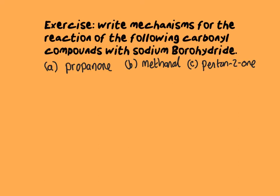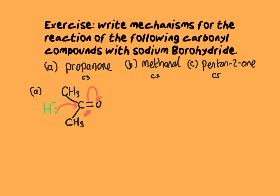In this next exercise, we're going to write mechanisms for the reaction of the following compounds with sodium borohydride: propanone, which is a C3 compound; methanal, which is C1; and pentan-2-one, which is C5. First, let's draw the structure of propanone. The best way to draw the mechanism is to show the bond angle around your planar ketone — the 120 degree bond angle. Here is the hydride ion with its lone pair of electrons attacking the electron-deficient carbon, and the pair of pi electrons moving onto the oxygen.